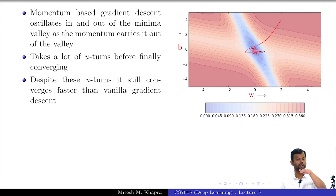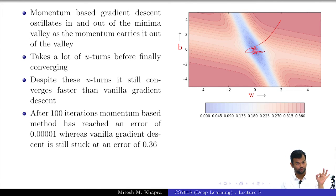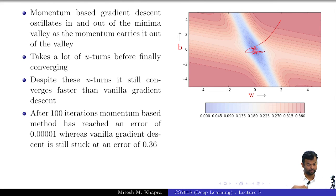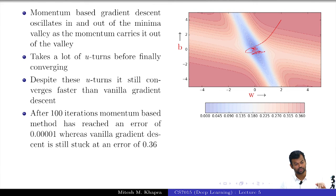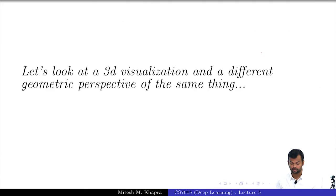It takes a lot of U-turns before converging, but despite these U-turns it still converges faster than gradient descent, because gradient descent simply cannot move at those gentle slopes — the gradient is almost 0. After 100 iterations, momentum-based gradient descent has reached an error of almost 0, whereas gradient descent is still stuck at the plateau at an error of 0.36. Once the loss is very close to 0, you can define that as your convergence condition and stop.